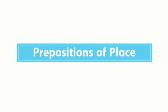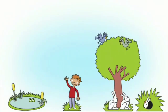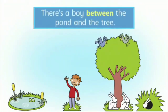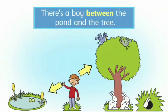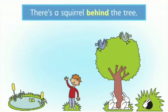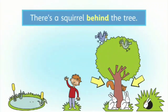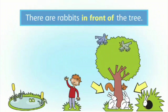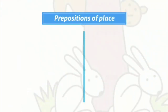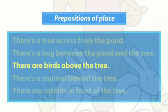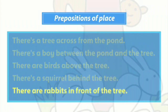Prepositions of place. There's a tree across from the pond. There's a boy between the pond and the tree. There are birds above the tree. There's a squirrel behind the tree. There are rabbits in front of the tree. We use these prepositions of place to talk about where things are in relation to something else: across from, between, above, behind, in front of.